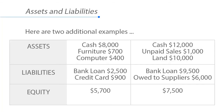Let's look at a couple more examples. In the first example, we have cash of $8,000, furniture of $700, and a computer of $400. These are all assets, and if we add them together, we get $9,100. We have liabilities of a bank loan for $2,500 and a credit card of $900. If we add our liabilities, we get $3,400. If we subtract those two totals, we get $5,700 in equity.